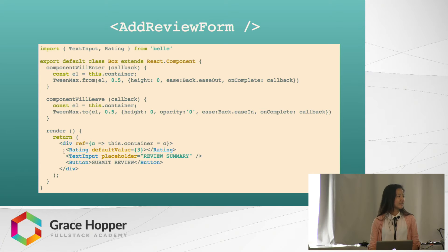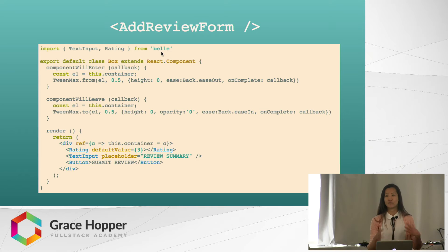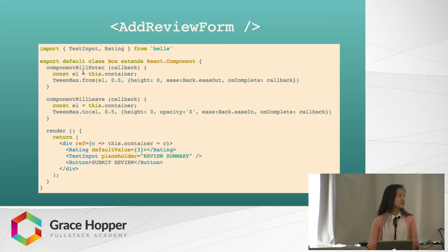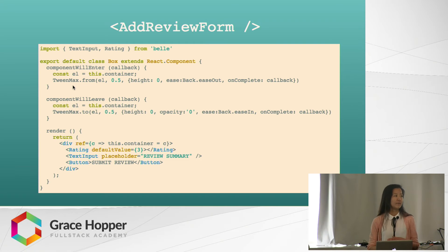The next thing to note is that I'm calling the Ratings component, which I've imported from a UI library called Belle. Ratings gives us those five stars that you can hover over and click on. It's really nice that they give you this functionality out of the box, so you don't have to code the hover CSS transition yourself. Right under that is the TextInput — again, another component from the Belle library. Then if we look at the componentWillEnter lifecycle hook, this is what happens when it first mounts on the DOM. I'm using a JavaScript library called GreenSock, which gives us a way to animate any numeric property on a JavaScript object.